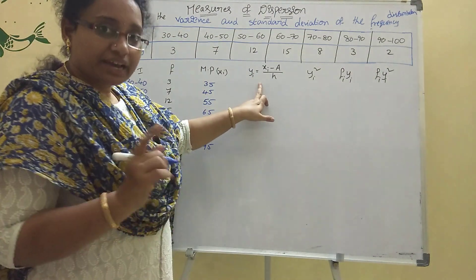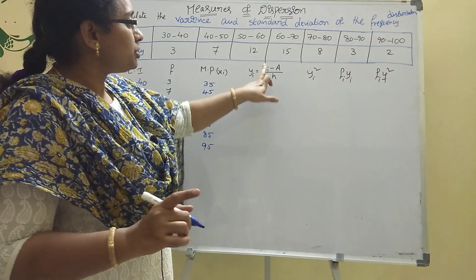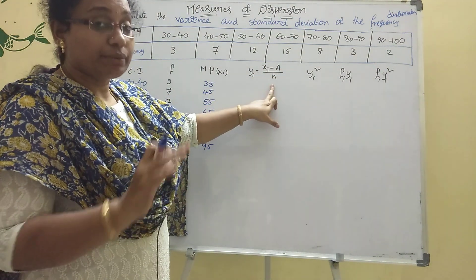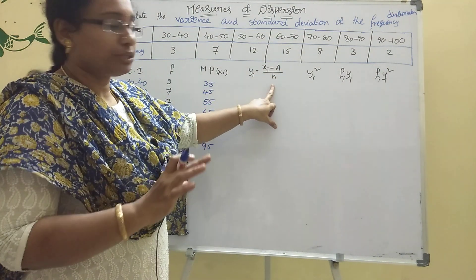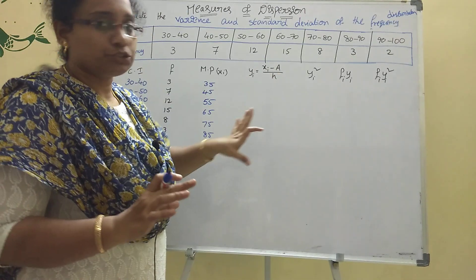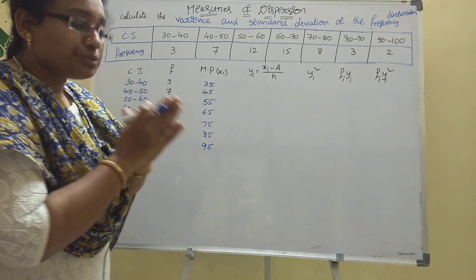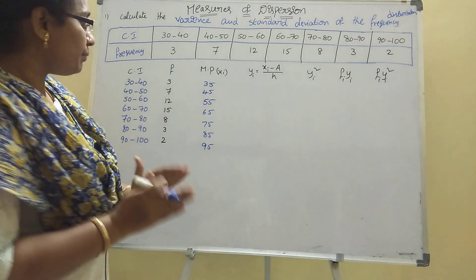The formula for yi is: yi = (xi − a) / h, where a is the assumed mean and h is the class width. Here a is taken as 65, the midpoint with the highest frequency.